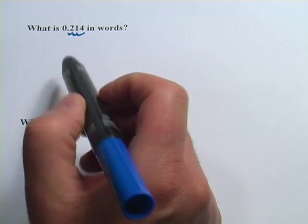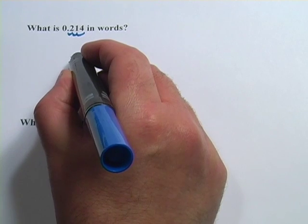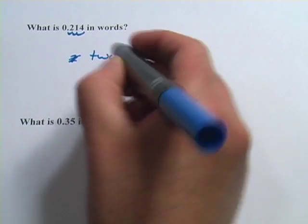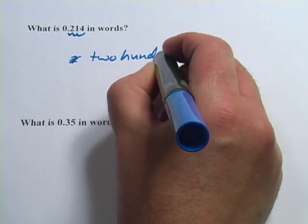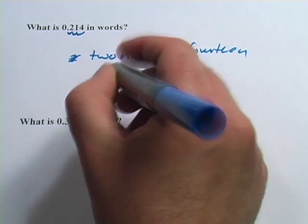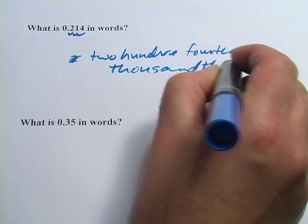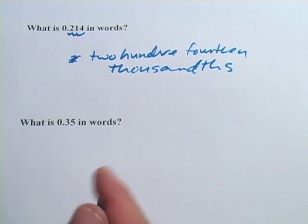And then in front of that, we have 214. So it's really 200... I'm supposed to write this. Two hundred fourteen thousandths. That's how I would write that out in words.